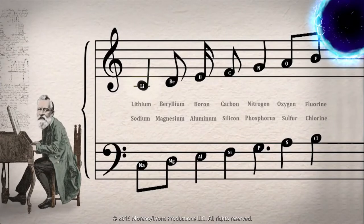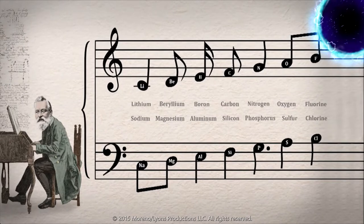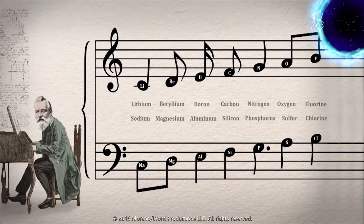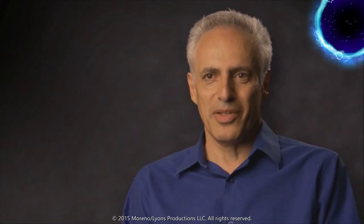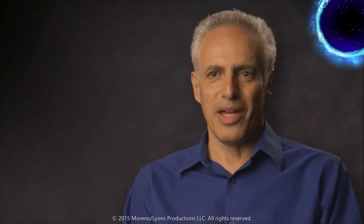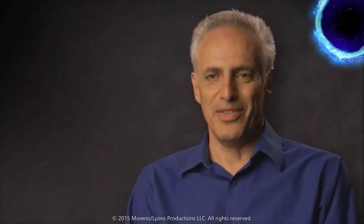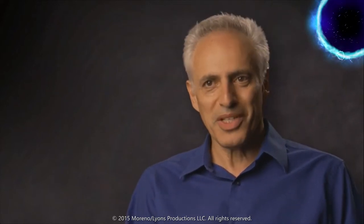He used the idea of octaves because it's a good analogy: just as the musical scale repeats after eight notes — you have the note C and after eight notes arrive at C again — similarly, you can have lithium, run through several elements, and then reach an element like lithium, namely sodium. But because Newlands dared to make that analogy, people began to think he was a complete crank. Not only was he a sugar chemist and an industrialist, but he was making outlandish suggestions about analogies between music and chemistry.